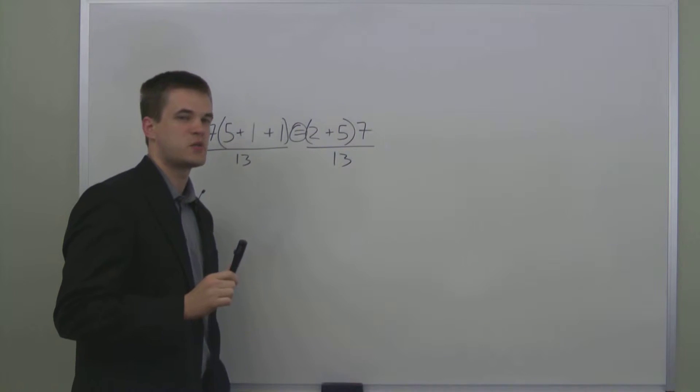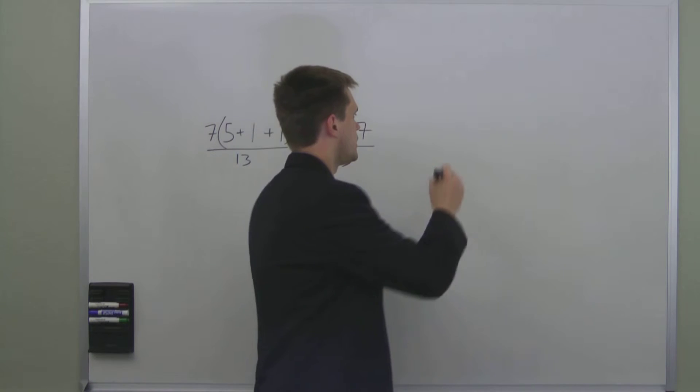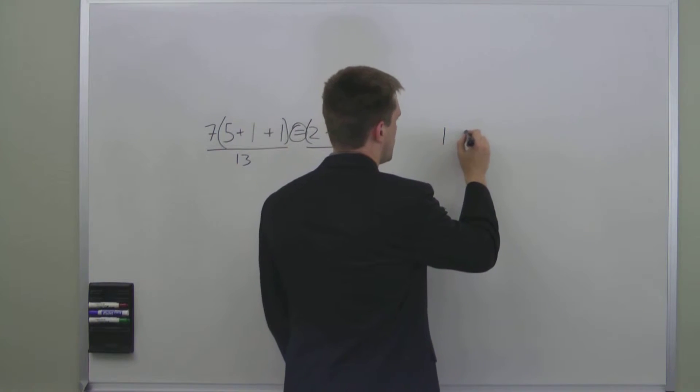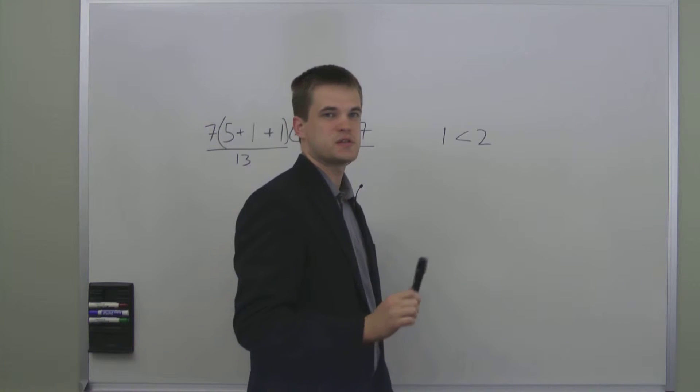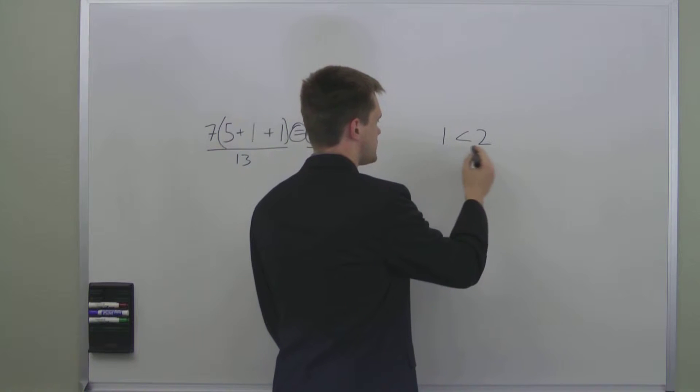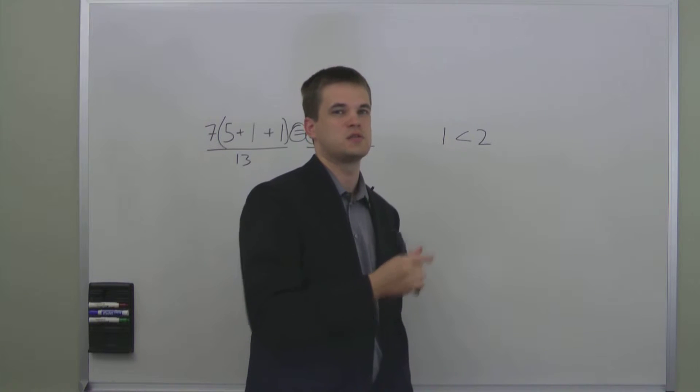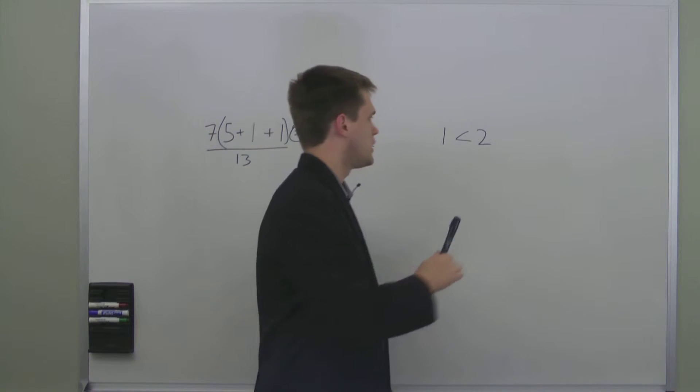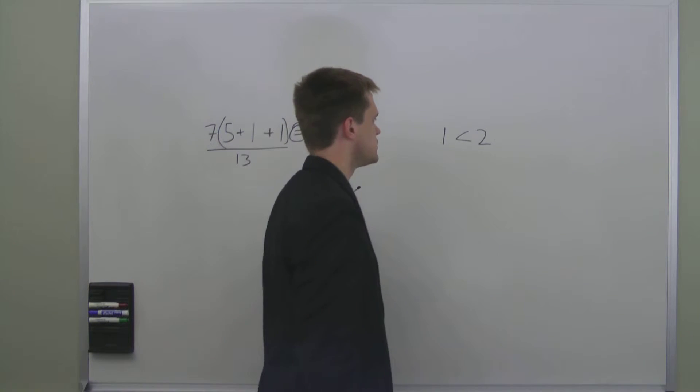Similar to equations, we have what's called an inequality. We might have the inequality 1 is less than 2. This consists of a mathematical expression on one side and a mathematical expression on the other side and a sign that indicates which side is greater or lesser. That's what we have here.